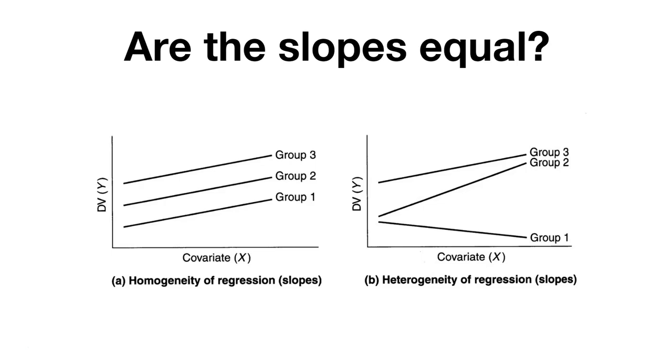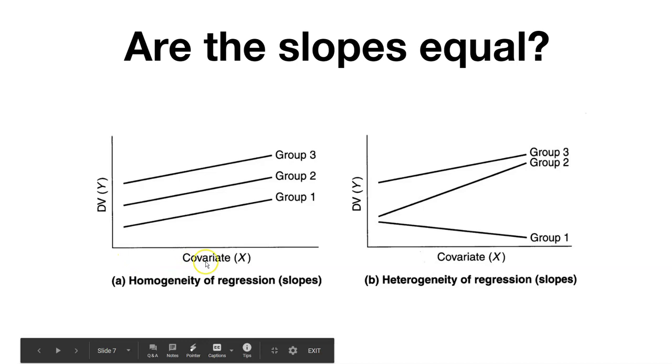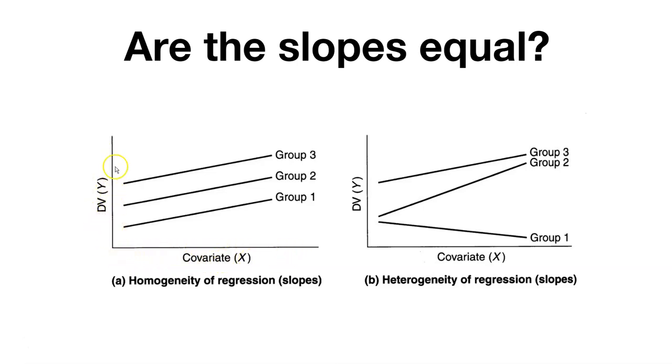On the left, we have what we call the homogeneity of regression slopes. We have a covariate x that we're interested in, and we're interested in predicting our dependent variable y. What we can see is that we have different groups or different levels in the dataset, a categorical dataset, and we have those values across different values of x. So you can see that the slopes are equal. Although there are different values of the y-intercept, the slopes are equal.